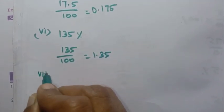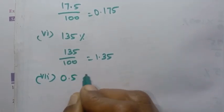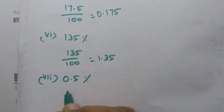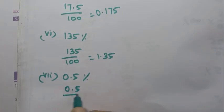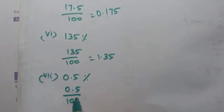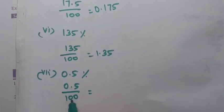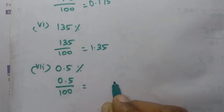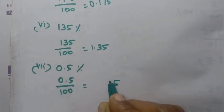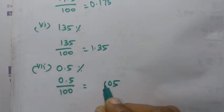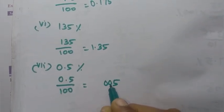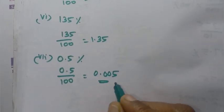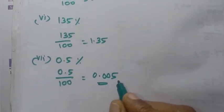Then 7th sum: 0.5 percentage. So 2 decimal places. 5 — 1, 2, 3 decimal places. 1, 2, 3. 0.005.